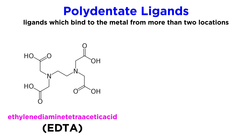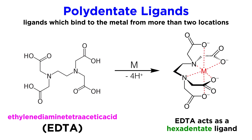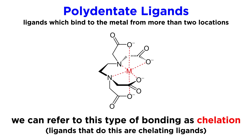Take this one for example: ethylenediamine tetraacetic acid, or EDTA. This is technically a hexadentate ligand, as it interacts with the metal atom from six different positions, making this octahedral complex. When ligands bind from multiple positions, we can also call this chelation, and the ligands which can do this are chelating ligands.